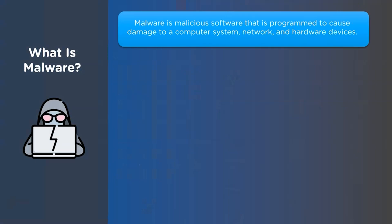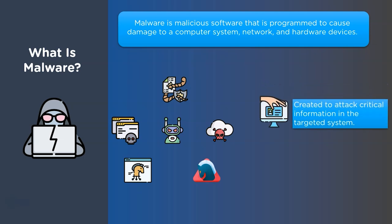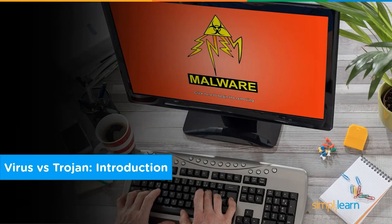Malware is a malicious software that is programmed to cause damage to a computer system, network, and hardware devices. Many malicious programs like trojans, viruses, worms, and bots which cause damage to the system are known as malware. Most malware programs are designed to steal information from the targeted user, or to steal money by stealing sensitive data. Let's take a look at two different types of malware: virus and trojan.